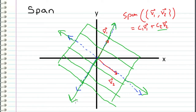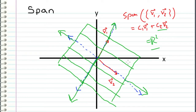In this case, we can reach any point in the xy plane, so we say the span of these two vectors is equal to R2, which represents the entire two-dimensional space.